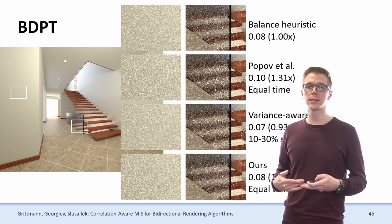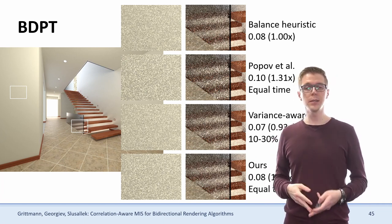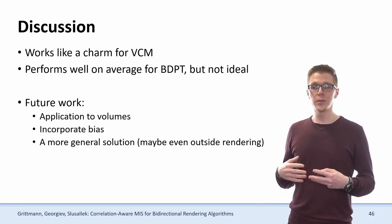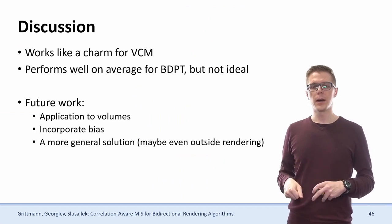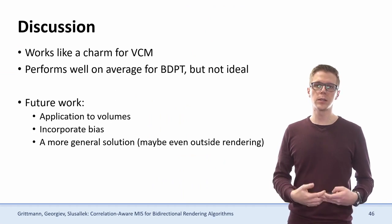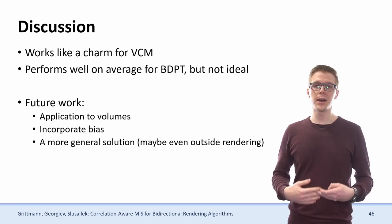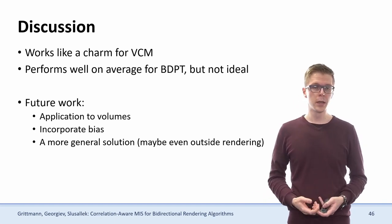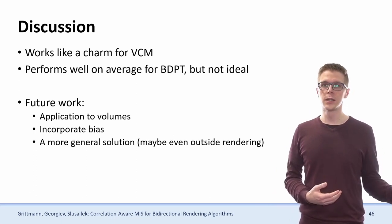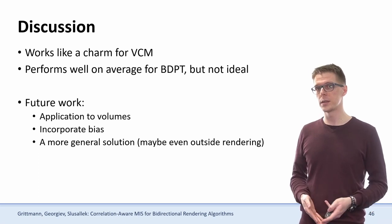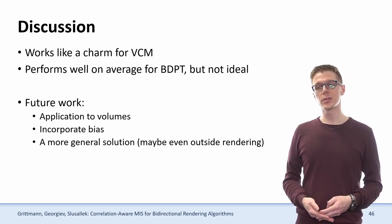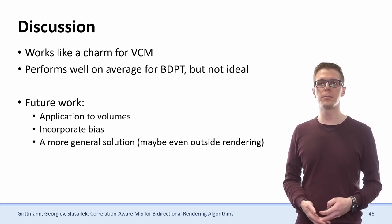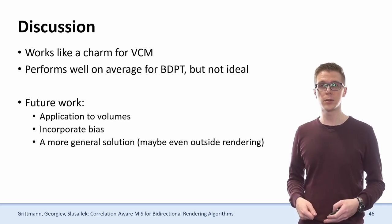That's why we get a result slightly worse than the balanced heuristic here, meaning that ultimately you would need something more costly to also handle these cases. We've seen that the simple heuristic works really well for VCM, but in the case of a bidirectional path tracer, there are some cases where it's not quite as good as the original balance heuristic. Finding something better that does not have to pay the price for variance estimates would be a very interesting direction for future work. It could also be nice to apply this to volumetric rendering and perhaps incorporate the bias of photon mapping into the MIS weights. Additionally, all theory so far holds only in the context of rendering, and it could be interesting to find something similar that's general and applicable to any Monte Carlo setting.